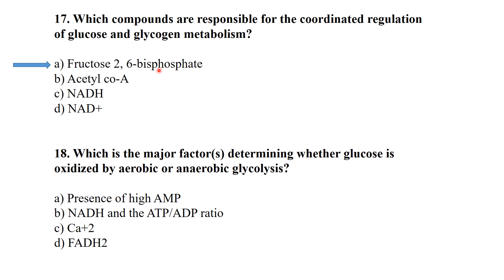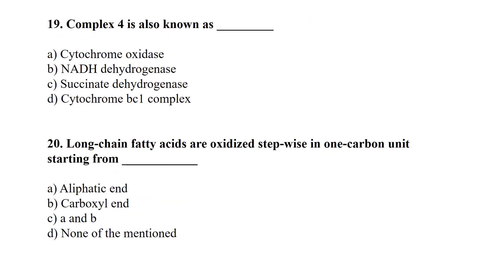What is the major factor determining whether glucose is oxidized by aerobic or anaerobic glycolysis? Mainly the NADH and ATP/ADP ratio determines aerobic or anaerobic glycolysis. If the number of NADH and ATP molecules is higher, it is aerobic respiration; if lower, it is anaerobic respiration or anaerobic glycolysis.